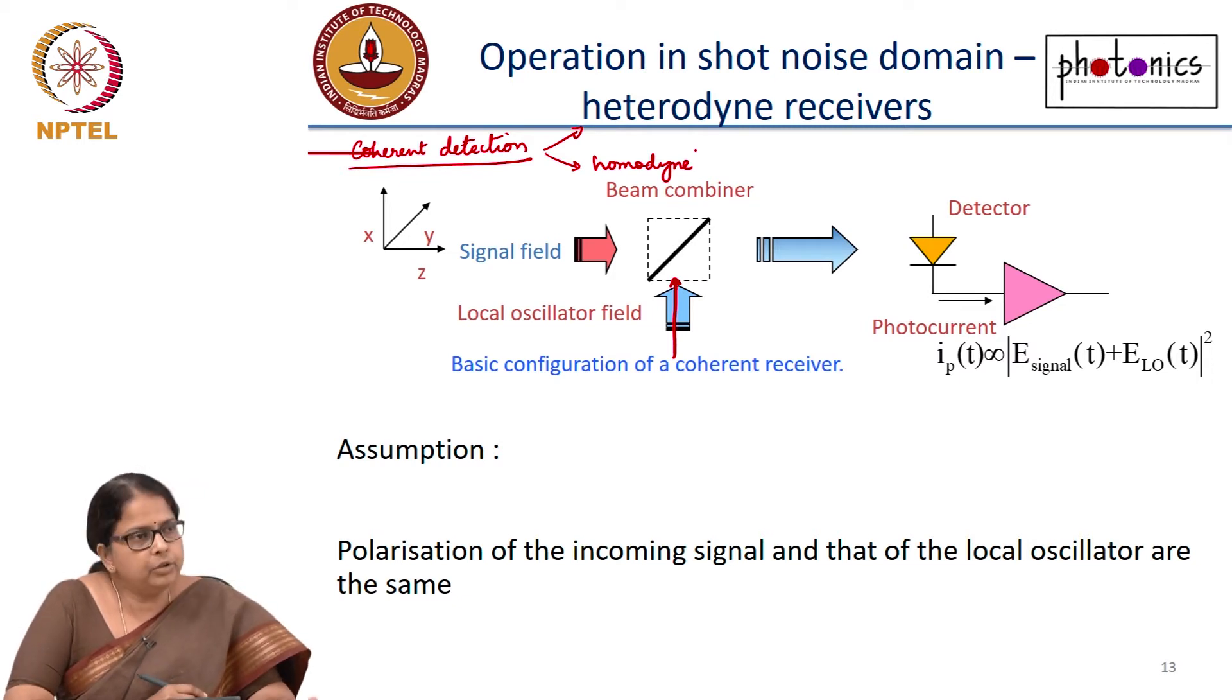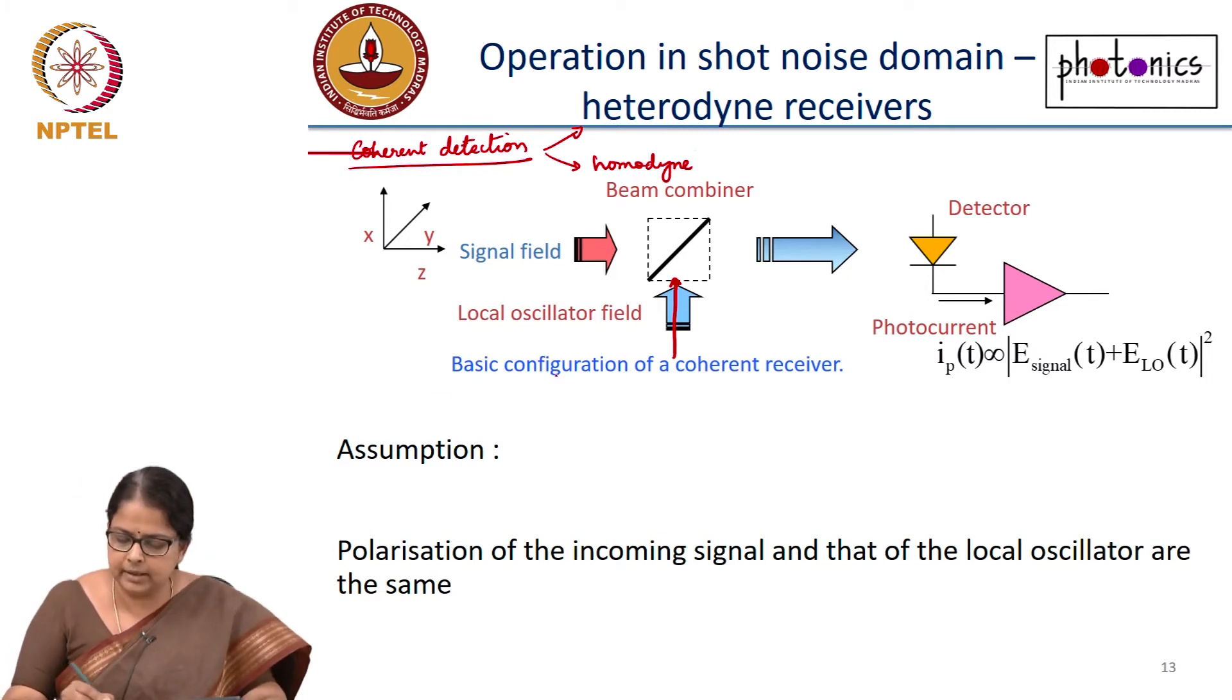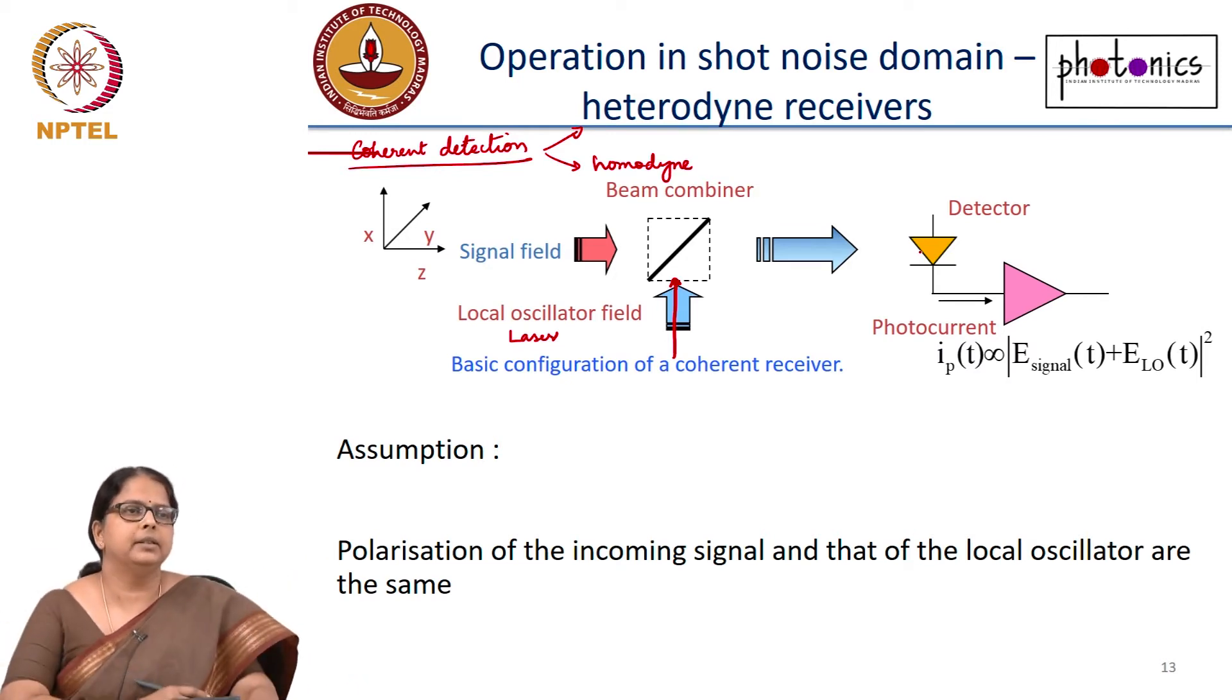What you are trying to do is increase the optical power falling on the receiver by adding light from a local oscillator laser. So this local oscillator is also a laser, another laser, so that the total power falling on the receiver is high. And so the shot noise becomes larger than the thermal noise.